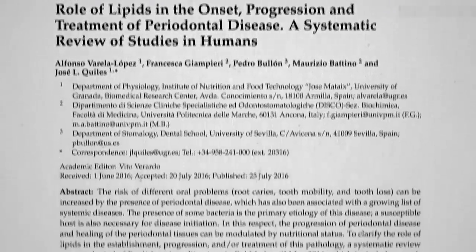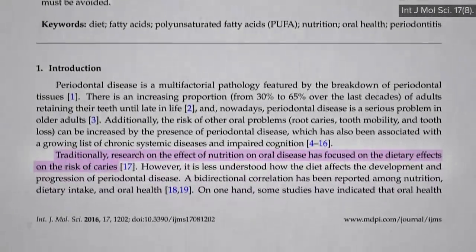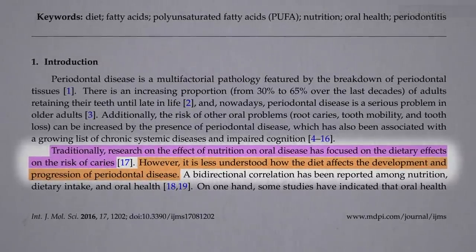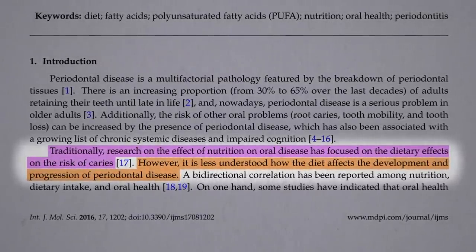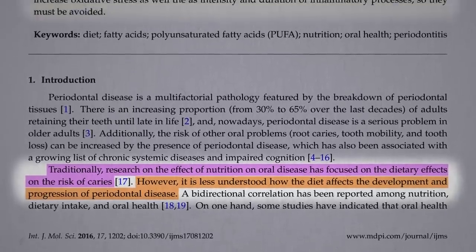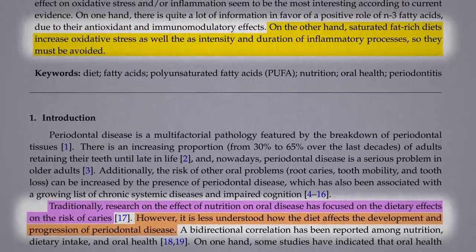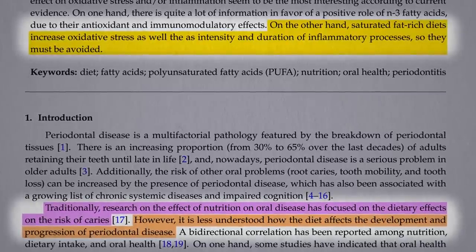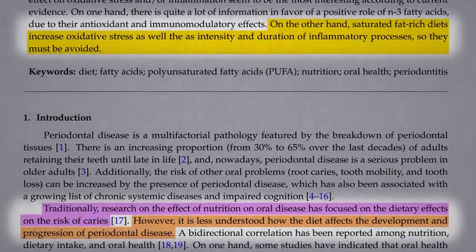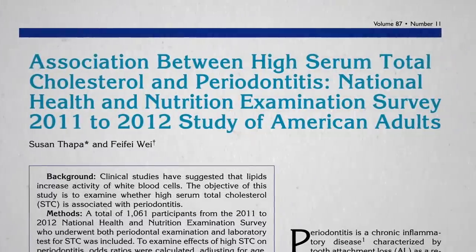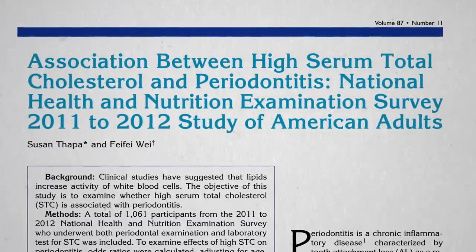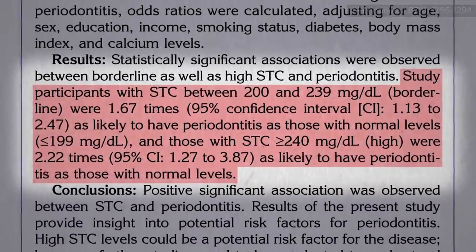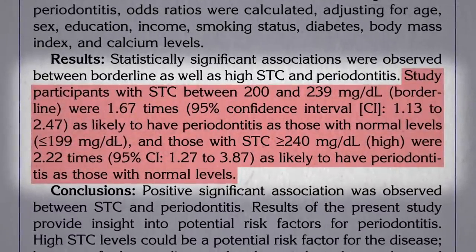Traditionally, when we think of the effects of nutrition on dental diseases, we only think about cavities. However, there's been less research on the role of diet in periodontal diseases. If it's about inflammation, one would expect saturated fat-rich diets to make things worse, increasing oxidative stress as well as inflammation, so we may want to cut down on saturated fat. Is there an association between cholesterol levels and periodontitis? There does appear to be a link — those with high cholesterol appear to have up to double the risk.